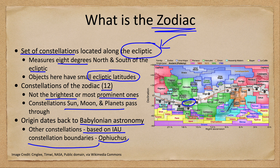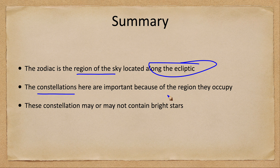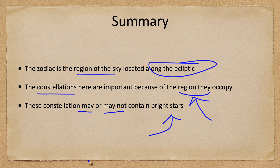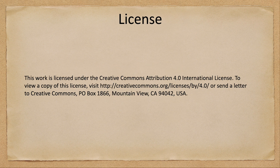So that's what the zodiac constellations are. To summarize: the zodiac is the region of the sky located along the ecliptic. The constellations here are important because of the regions they occupy and the objects that pass through them, and they may or may not contain the brighter stars. That concludes this discussion on the zodiac. We'll be back again next week for another topic in astronomy — until then, have a great day everyone, and I will see you in class.